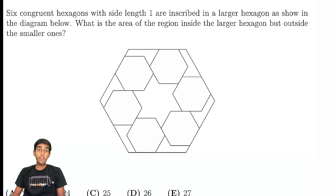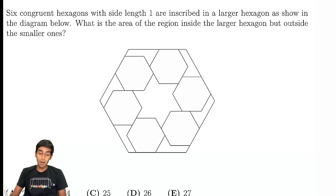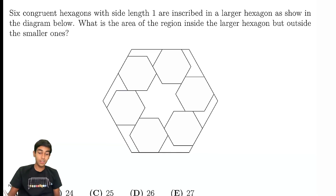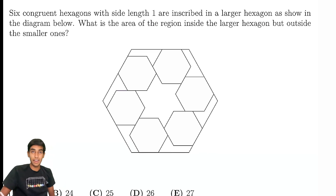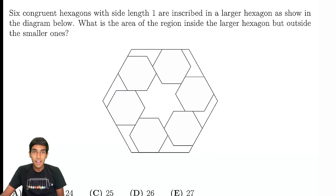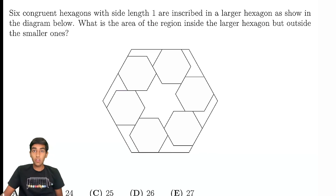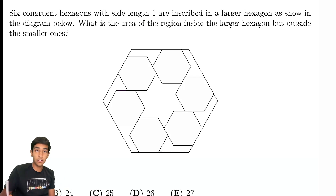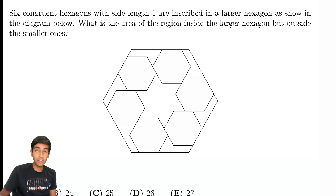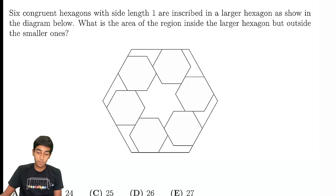This is one of the hardest, if not the hardest, problem on the 2023 AMC-10A. Six congruent hexagons with side 1 are inscribed in a larger hexagon as shown in the diagram below. We need to find the area of the region inside the larger hexagon but outside the smaller ones.